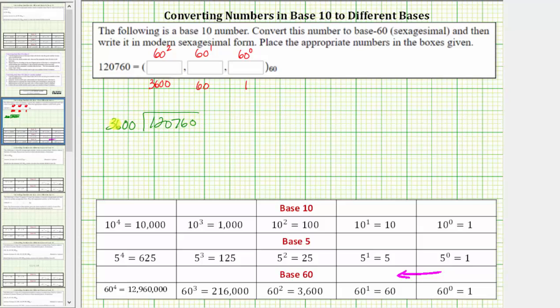We begin by determining how many 3,600s are in 120,760, which is three. Three times 3,600 is 10,800. And now we subtract.